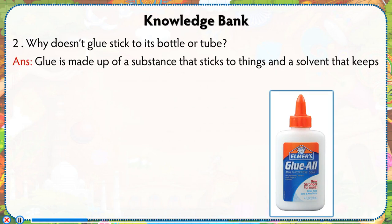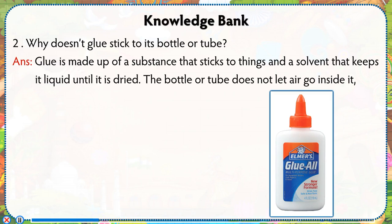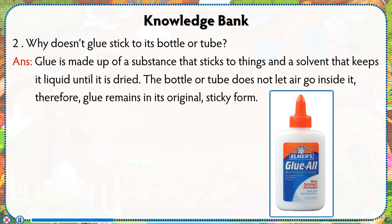Glue is made up of a substance that sticks to things and a solvent that keeps it liquid until it is dried. The bottle or tube does not let air go inside it. Therefore, glue remains in its original sticky form.